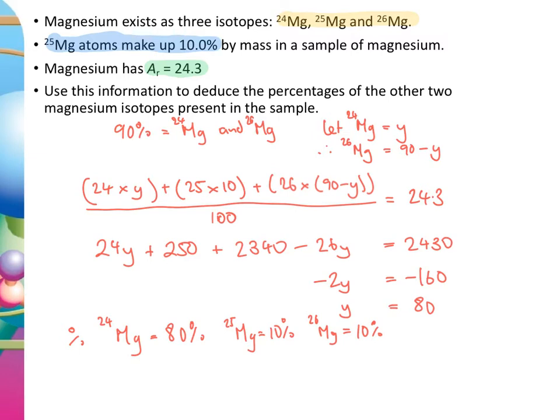The key thing — and I really can't stress it enough — is that you don't want to have more than one algebraic term, as it makes life very difficult. So I had Y and 90 minus Y for my two unknown abundances.